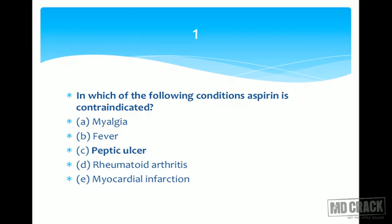You might have confusion about rheumatoid arthritis. Aspirin is an NSAID and could be used there — it's not harmful and doesn't worsen the condition. However, it doesn't affect the progression of rheumatoid arthritis, and better drugs are now available. So it's not preferred, but it's not contraindicated. We chose peptic ulcer as the best answer.